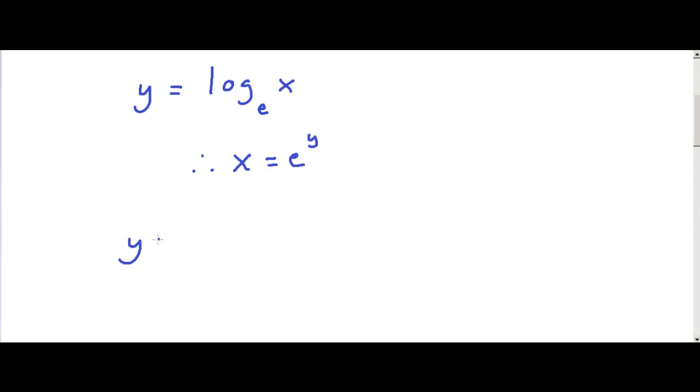So, if we have y equals the logarithm of e to the power of y to the base e, this is actually equal to y multiplied by the logarithm of e to the base e. And this is y times 1, which is y.